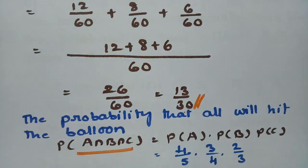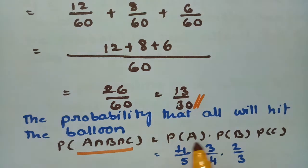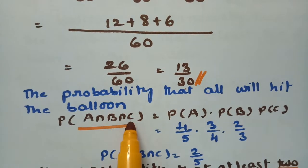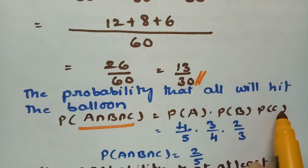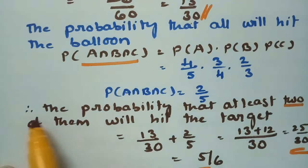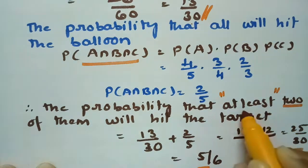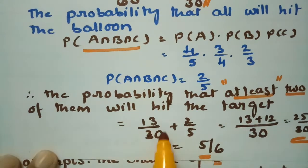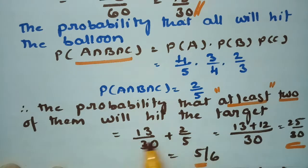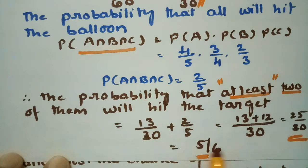At least 2 also includes the case where all 3 hit the balloon. The probability that all 3 hit is P(A∩B∩C) = P(A)·P(B)·P(C) = (4/5)·(3/4)·(2/3) = 2/5. Therefore, the probability that at least 2 hit the balloon is 13/30 + 2/5 = 13/30 + 12/30 = 25/30 = 5/6.